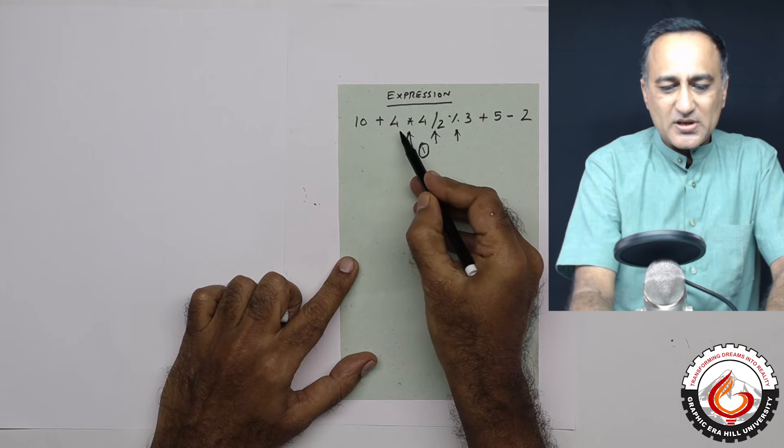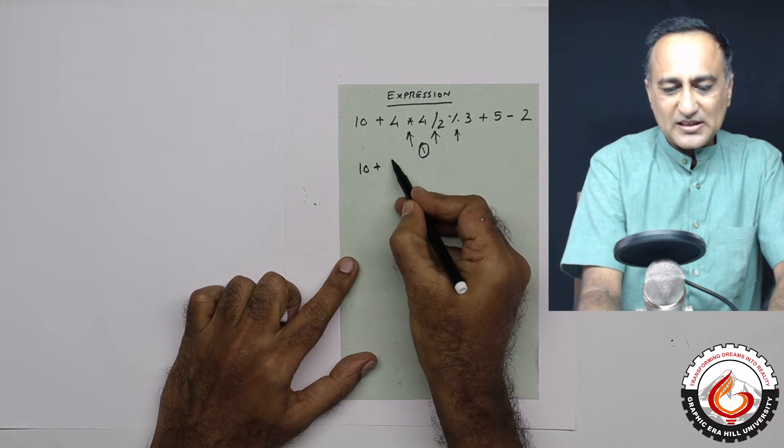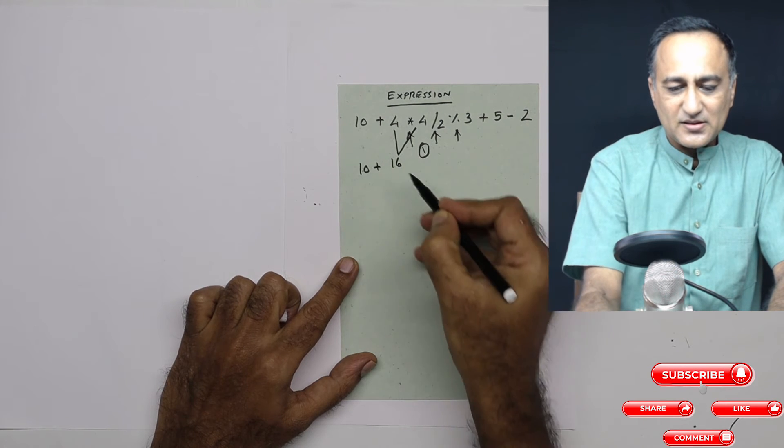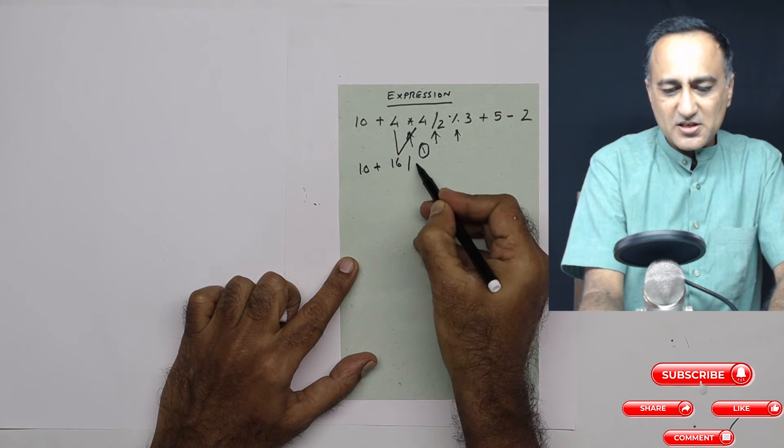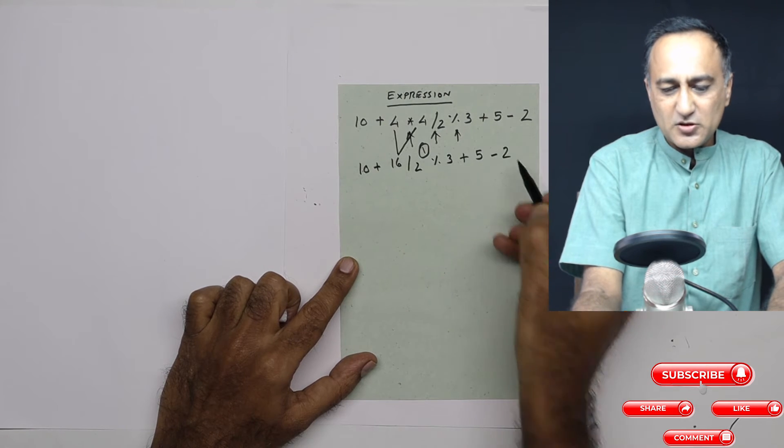So what we're going to do in the first stage is multiply 4 into 4. So it is going to be 10 plus 16 divided by 2 mod 3 plus 5 minus 2.